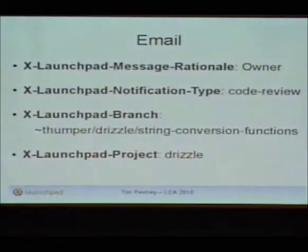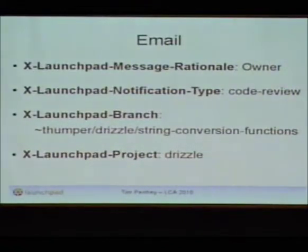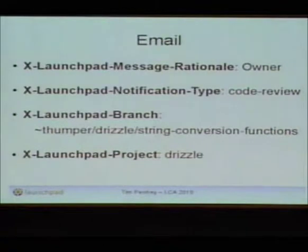With a cool email client you can actually see a colored diff inline. This is Kmail — I use Kubuntu. We add a lot of useful email headers for filtering. These are the Launchpad-specific email headers: the Launchpad message rationale tells you why you got this email — I got it because I'm the owner. It is a code review type email, associated with that branch and the Drizzle project. Using those combinations of headers, I can filter them into all sorts of folders — except if you use Gmail, because Gmail doesn't allow you to sort on headers.